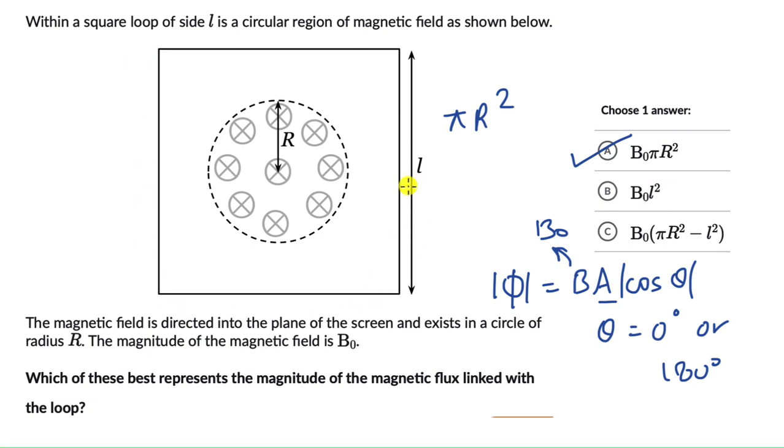The second option gives us B0L², so that is considering the entire area of the square loop, not the area that is linked with magnetic field. In the C option we have πR² minus L².